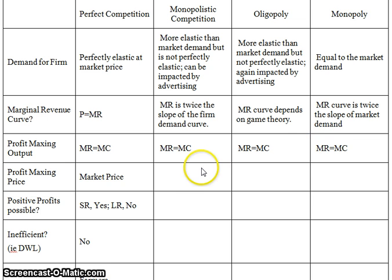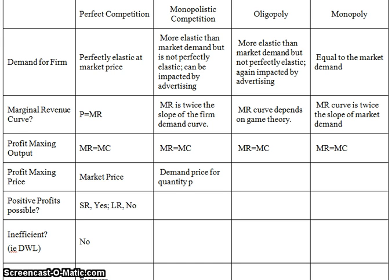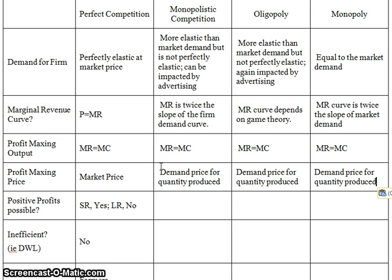Looking at the table: the profit-maximizing price for a perfectly competitive firm is just the market price. For all other firms — monopolistic competition, oligopoly, and monopoly — it's the demand price for the quantity produced. Even for the oligopoly, they still charge a price on their demand curve corresponding to their chosen quantity; we just don't know what the marginal revenue curve looks like, so we can't draw it.